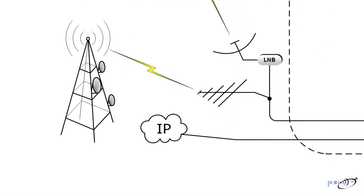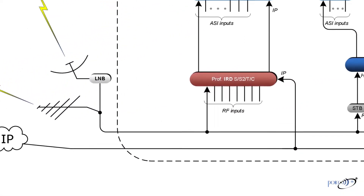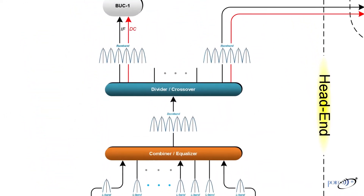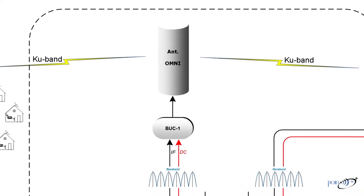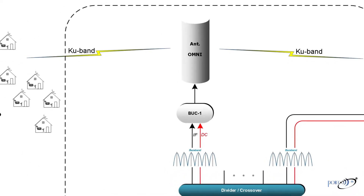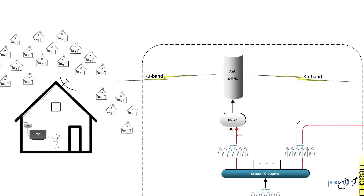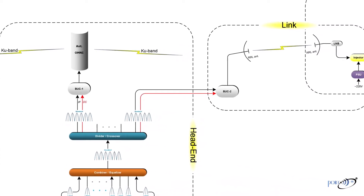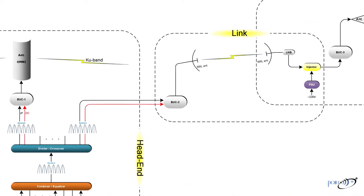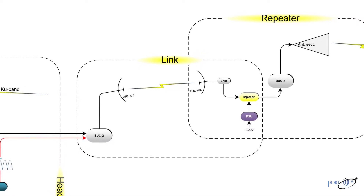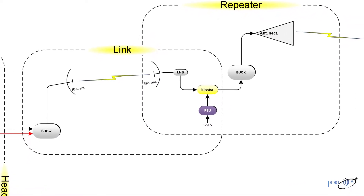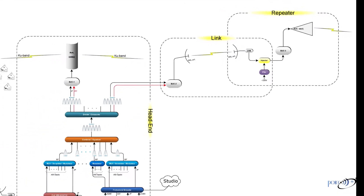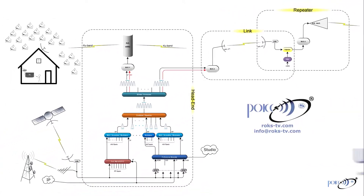Digital video broadcasting communications. Multi-point video distribution system for microwave TV broadcasting. These are radio relay systems of C, X, KU, K and KA bands with high level of channel capacity. TV head-end, TV link and TV repeater stations. All-in-one video developed and presented by ROX company and its subsidiary Ukrainian Microwave Technologies.